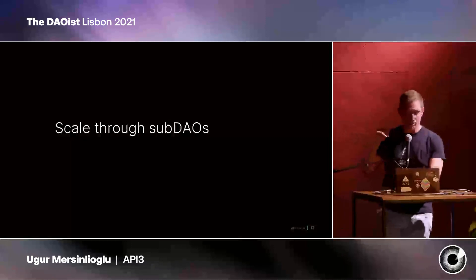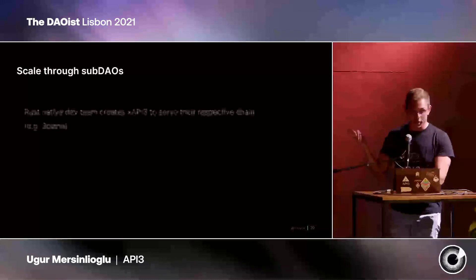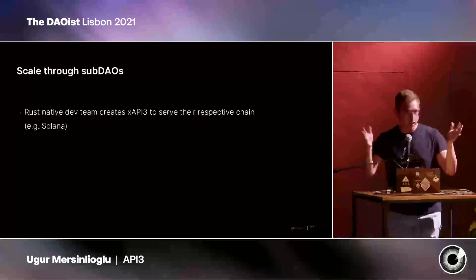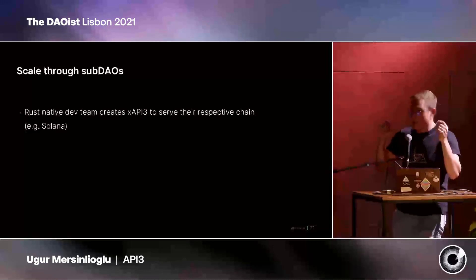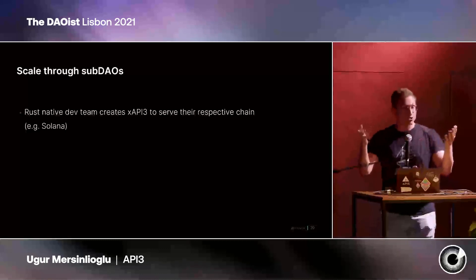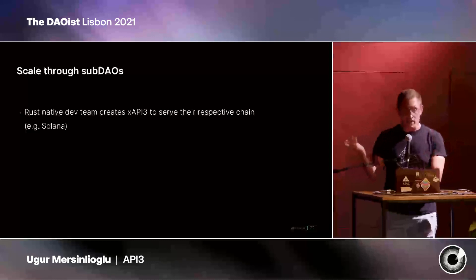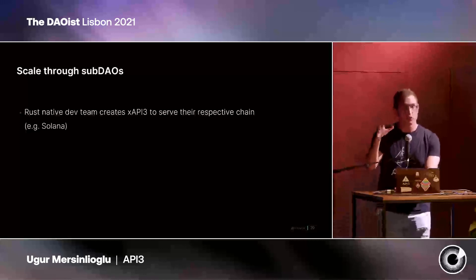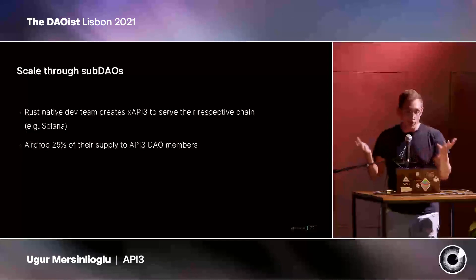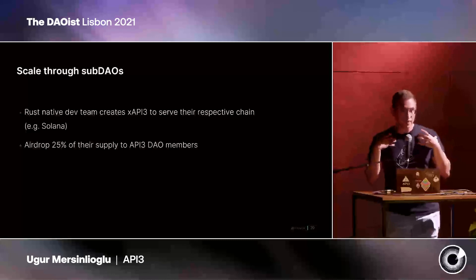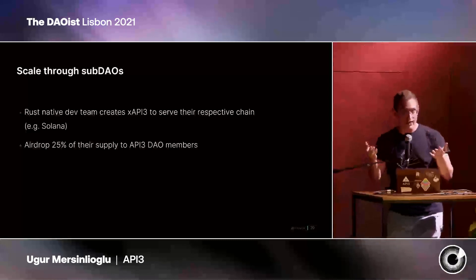For example, imagine a team of Rust native developers — the programming language for Solana — that creates an XAPI3 token to serve data on Solana. They approach the API3 DAO and say: we want to use your data providers, use your Airnode, adjust your code for Solana, and sell your data on Solana. We offer you 25% of our native token on Solana. Basically, we sell your data on Solana and you help us do that.